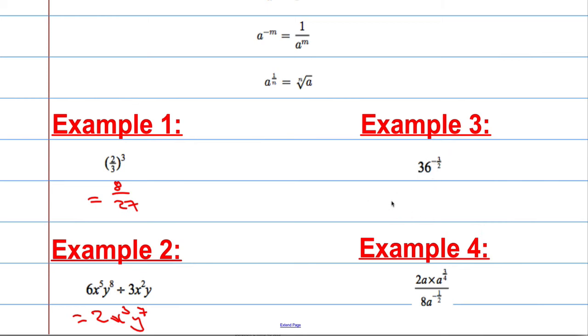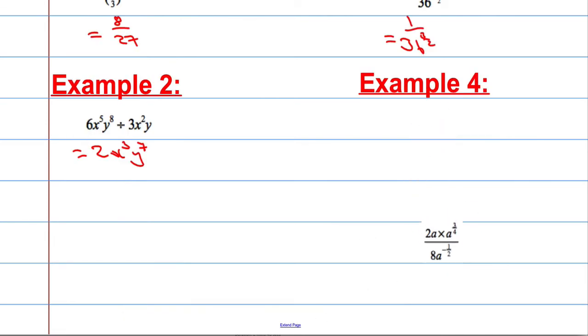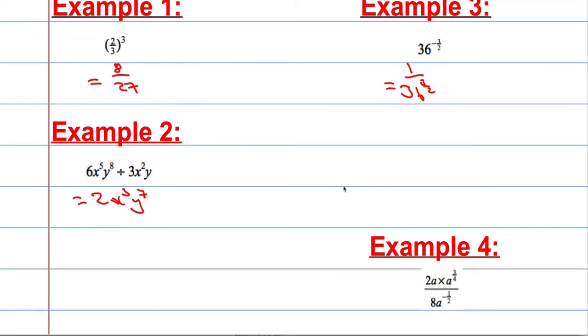36 to the minus 3 over 2. We should know that we can write this—it's essentially this rule here, a to the minus m equals 1 over a to the m. So it's the same as 1 over 36 to the power of 3 over 2. Let me make some space. So we get 1 over 36 to the power of 3 over 2, which is going to be 1 over... Now we can think of this as 36 to the power of a half cubed.